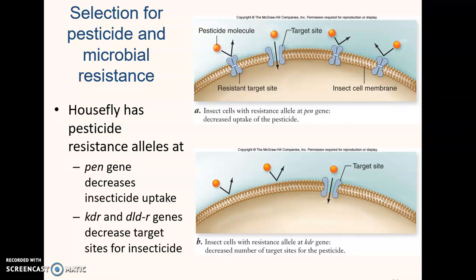Another good example is the Norway rat, which is commonly controlled using warfarin, a blood thinner used therapeutically in humans. But as a pesticide, it can be used to decrease clotting in rats, thus increasing the likelihood of hemorrhaging. Norway rats now have one gene that completely kills the efficacy of warfarin.